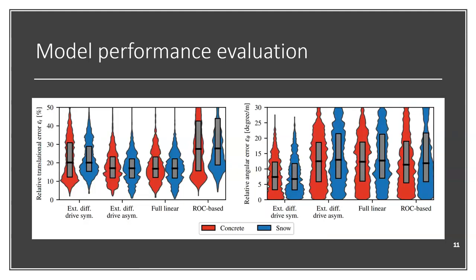Secondly, we compared the four trained kinematic models that are presented in this article. What we can see in this figure is on the left side, we can see the relative prediction error for translational displacement, and on the right side, we can see the same error but for angular displacement. The red distribution shows the errors for the robot when operating on concrete, and in blue, we can see the errors when the robot is operating on snow-covered terrain. What we can see in this figure is that the models perform similarly as good for both terrain types.